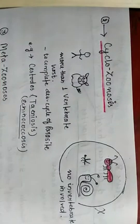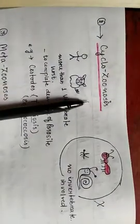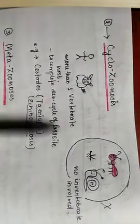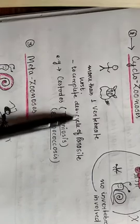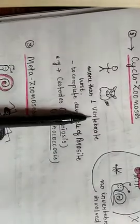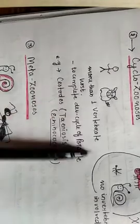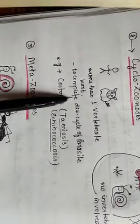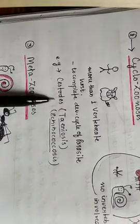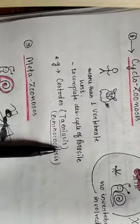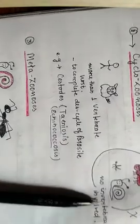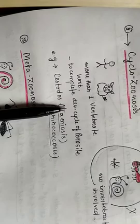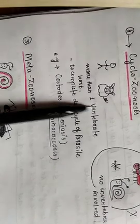The next type of zoonosis is cyclozenosis. In cyclozenosis, there is no invertebrate host involved and the life cycle of the parasite is completed in only the vertebrate host. And it can be more than one vertebrate host. And the example of cyclozenosis is cestodes parasites, such as teniosis and echinococcosis. They can have more than one host, but there will be no involvement of any invertebrate host. Such type of zoonosis where no invertebrate is involved is cyclozenosis.